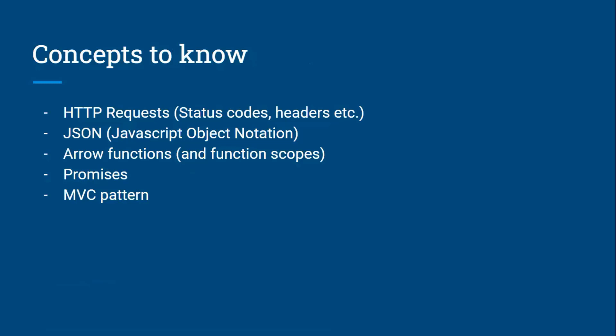Concepts to know include HTTP request status codes: 200 means success, 201 means created, 404 means not found, 400 means bad request, and 403 means forbidden. You should also know about headers, JSON (JavaScript Object Notation), arrow functions, promises, and the MVC pattern, all of which will be covered in this tutorial.